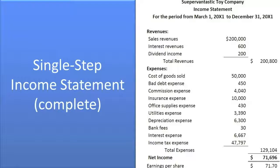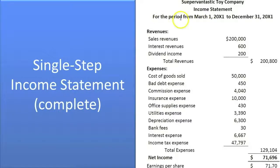This is the single-step income statement. You title it with the name of the company, name the statement — income statement — and indicate the period. In this case, it's a brand new company which started on March 1st. Normally it would be for the year ended December 31st, but we only started in March, so that will be our period. I know it's unusual, but I thought you'd at least want to see that.